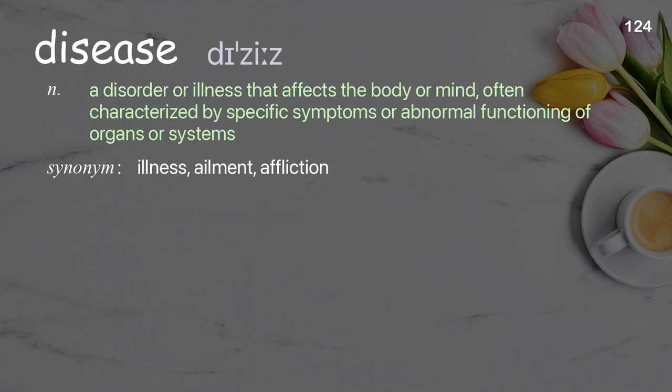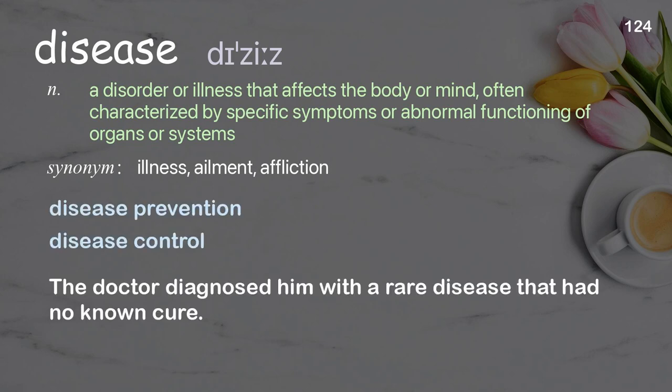Disease: A disorder or illness that affects the body or mind, often characterized by specific symptoms or abnormal functioning of organs or systems. Examples: Disease prevention. Disease control. The doctor diagnosed him with a rare disease that had no known cure.